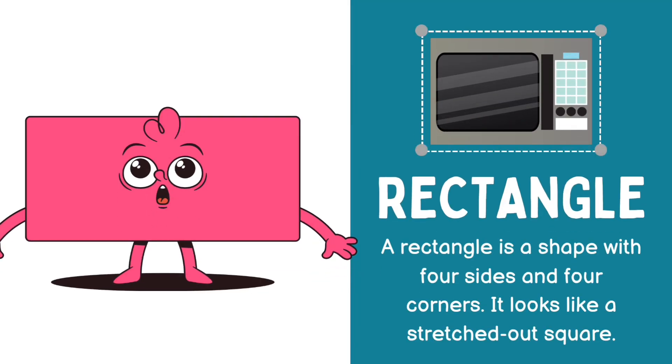Rectangle: A shape with four sides and four corners. It looks like a stretched out square.